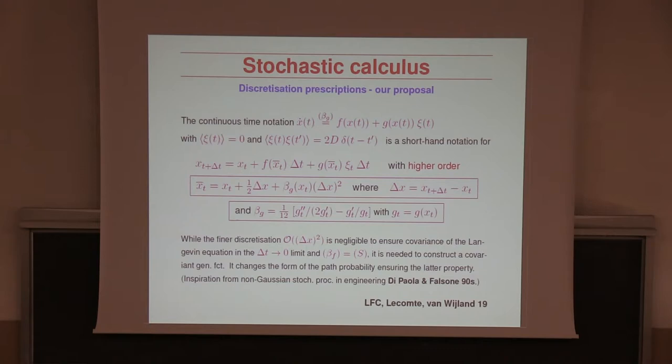This looks very weird, but I will tell you why this is a good choice and why it solves the problem. This kind of discretization is known and has been used in the context of engineering, where people also use stochastic processes. For simplicity and later convenience, I will take alpha to be one-half in the following.